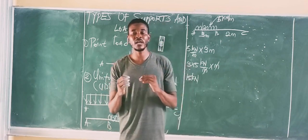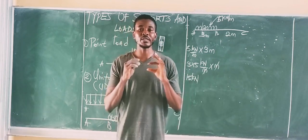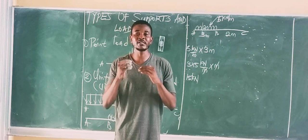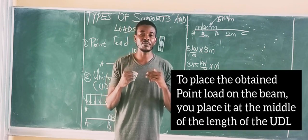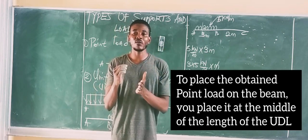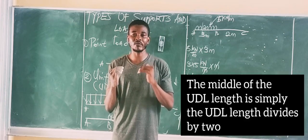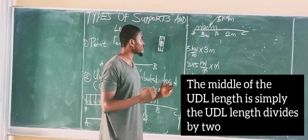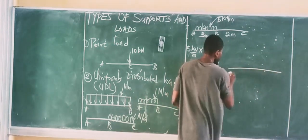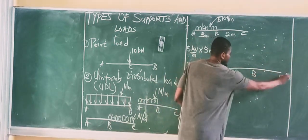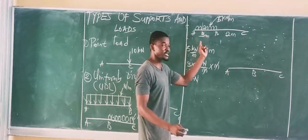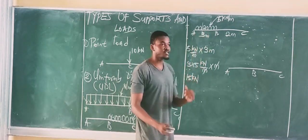After converting the UDL to a point load, you now have to place this point load on the beam. Place it at the middle of the length covered by the UDL. Get the length covered by the UDL and divide it by 2 — that gives the midpoint. In this case, the length covered is 3 meters, so 3 ÷ 2 = 1.5 meters from each end.